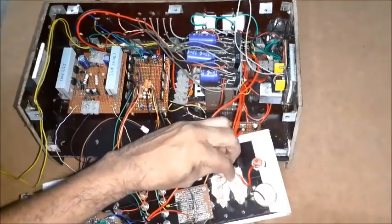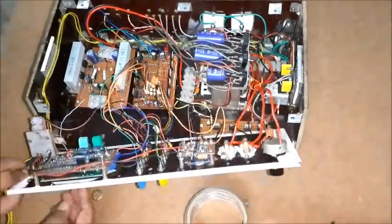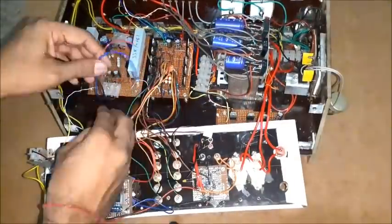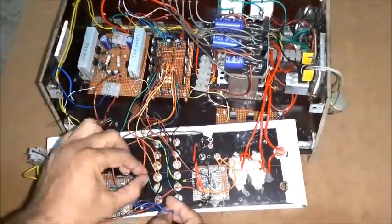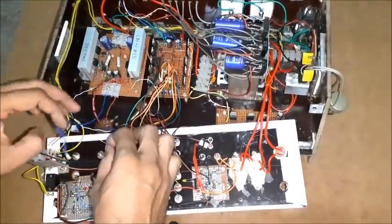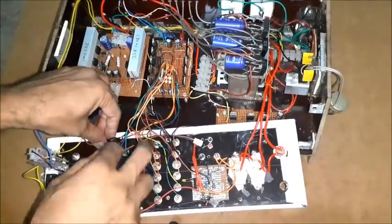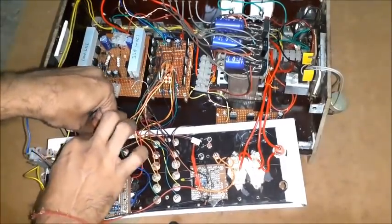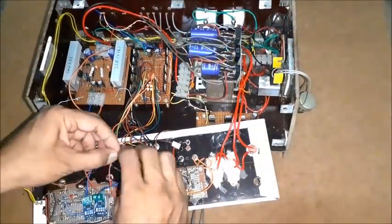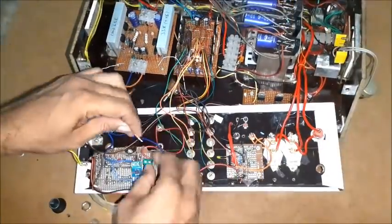Connect all AC switches as per the circuit. Connect bipolar volt amp meter to dual variable power supply module as per the circuit. Connect through current sensors ACS712.